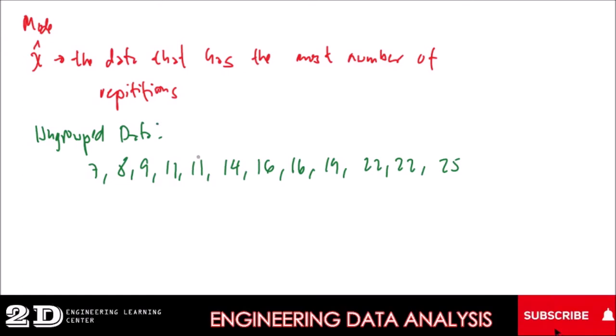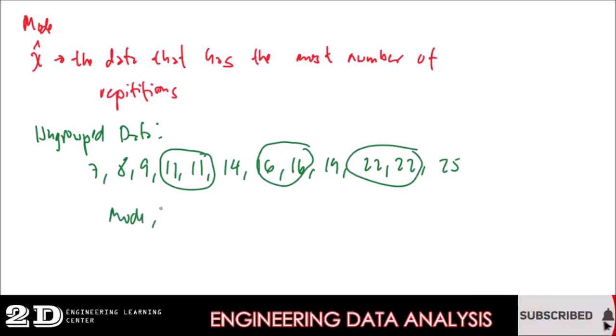Okay, so for this given, we have 11, we have 16, and we have 22. So our mode is 11, 16, and 22.